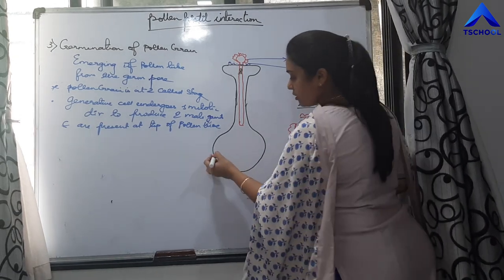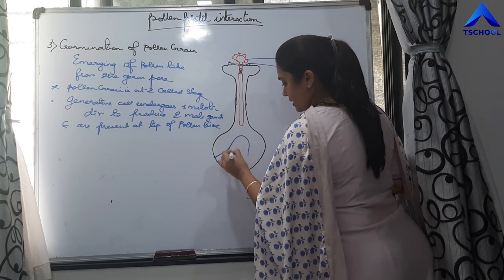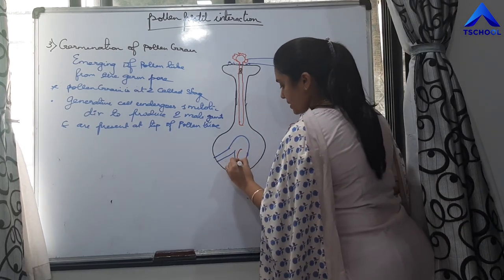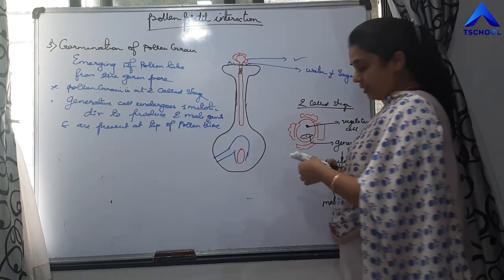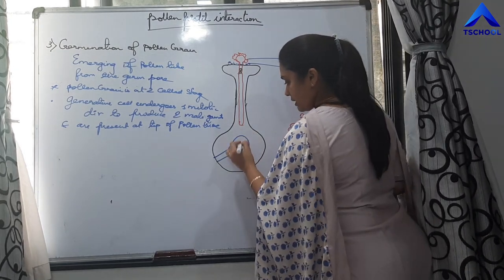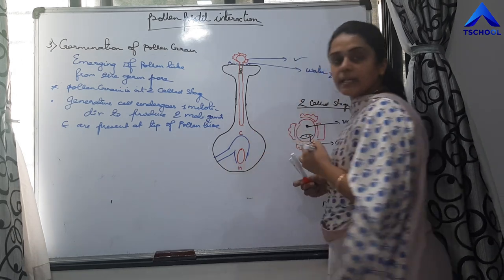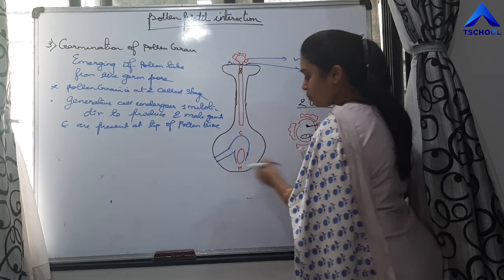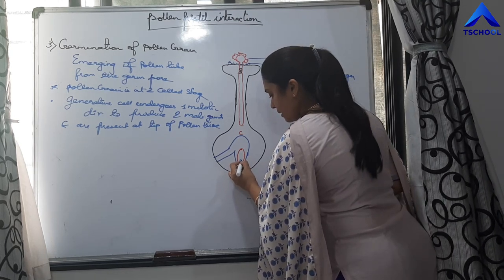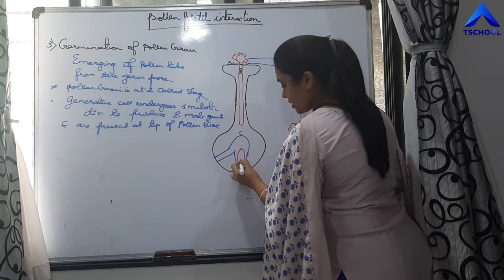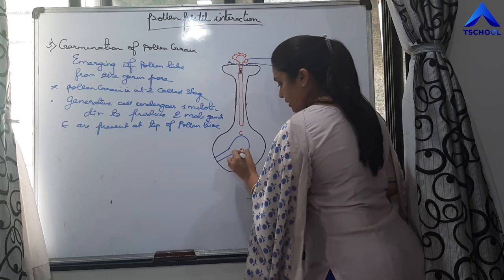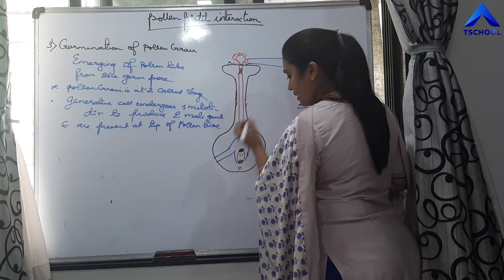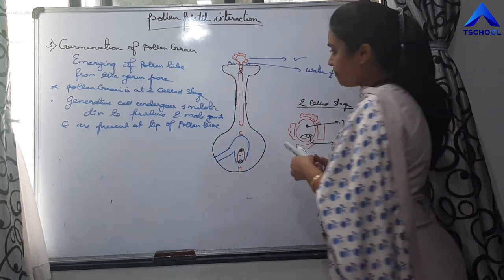What is present inside the ovary? Within the ovary is the ovule. The ovule possesses an embryo sac. Within the embryo sac — this is the chalazal end, this is the micropyle end. There are three cells present towards the micropyle end: one egg cell and two synergid cells. In the center, there are two polar nuclei, and towards the chalazal end, there are three antipodal cells.